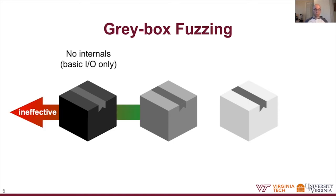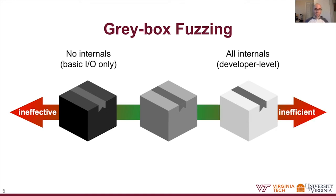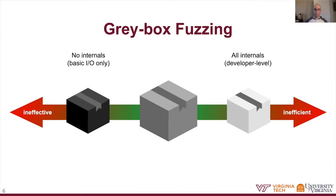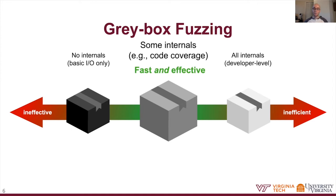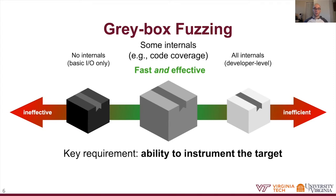White box testing, on the other hand, assumes you have the maximal level of knowledge of the program's internals, and you get more precision, but it's so heavyweight that it doesn't scale on modern programs. In the middle is gray box fuzzing, which assumes a lightweight level of access to the target program's internals—for example, the ability to trace code coverage—making it much faster than white box fuzzing and more effective than black box fuzzing. The key requirement is that you must be able to instrument the target program to achieve this level of introspection.